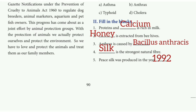Fourth one: anthrax is caused by Bacillus anthracis. Fifth one: silk is the strongest natural fiber — the answer is silk. Sixth one: Pea silk was produced in the year — the answer is 1992.